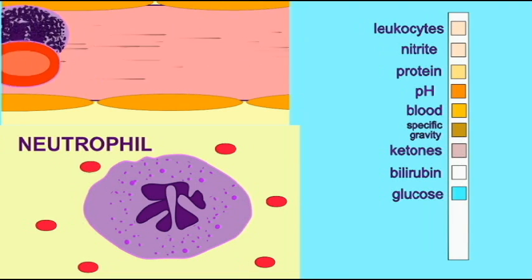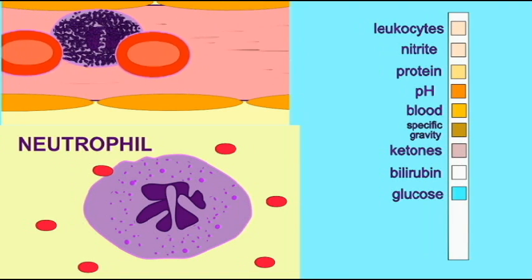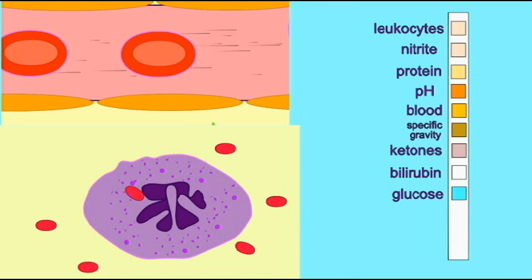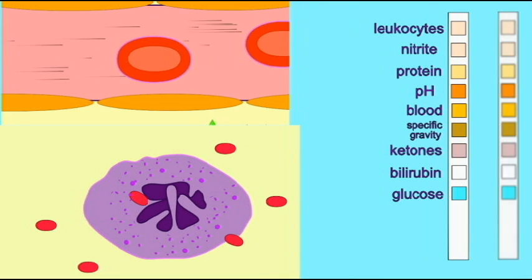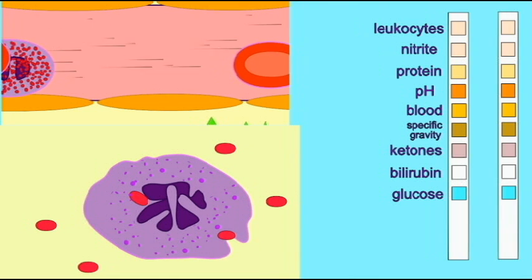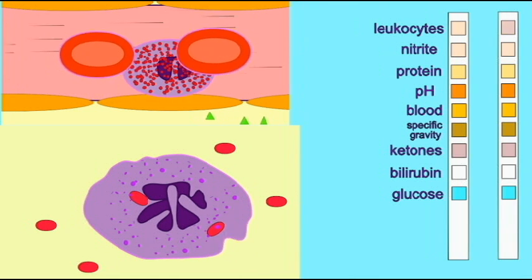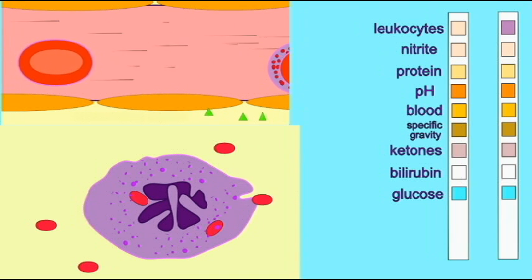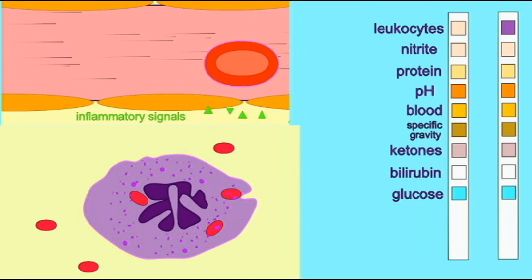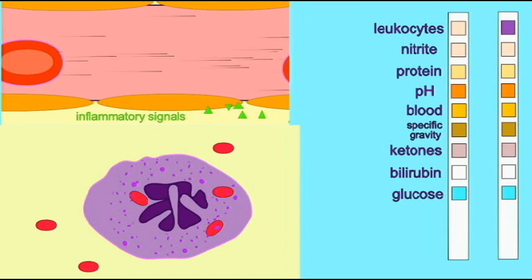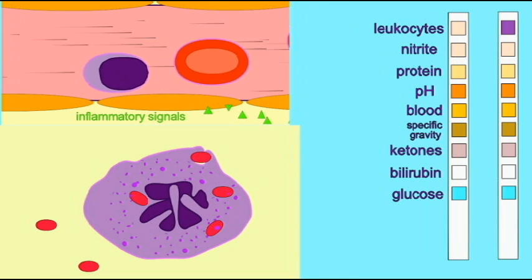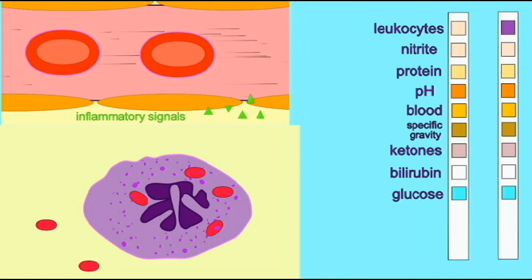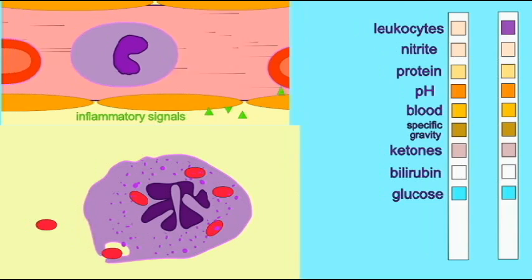White blood cells are not passed through the filtration membrane. If they are present in urine, this is due to the migration of white blood cells to the site of an infection. Urinary tract infections, or UTIs, are more common in women.